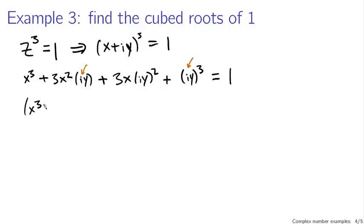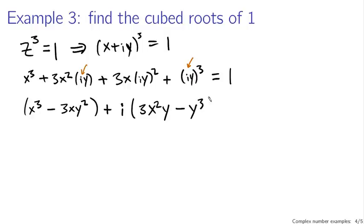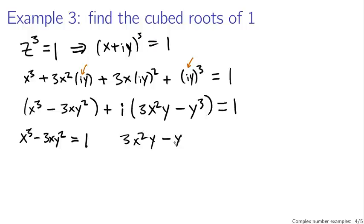Looking at these expressions: the iy term gives i·y, the iy-squared term gives i-squared which is a minus sign, and the iy-cubed term gives i-cubed which is minus i. So I have two complex parts and two real parts. Rewriting: x cubed minus 3xy², plus i times (3x²y minus y³), and this has to equal one. In order for this complex number to equal this complex number, both the real parts and the imaginary parts have to be equal, giving us two separate equations: x³ minus 3xy² equals one, and 3x²y minus y³ equals zero.